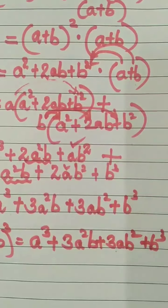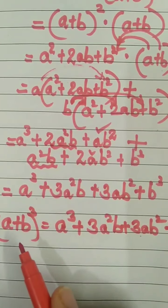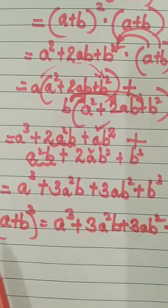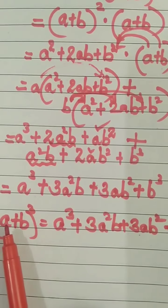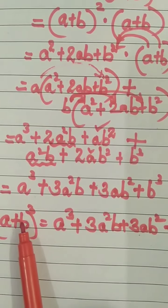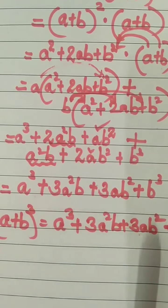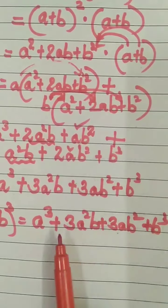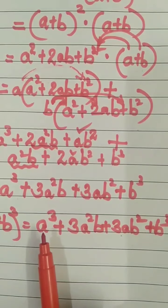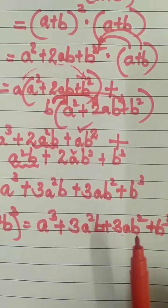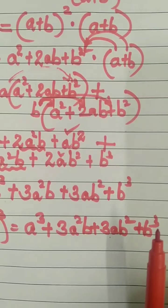So with this long multiplication process, we got the expansion formula of (a + b) whole cube. Here is a trick to remember: a cube, then 3a²b, then 3ab², then b cube. For plus, all the signs are plus only. Repeat with me: (a + b)³ = a³ + 3a²b + 3ab² + b³.